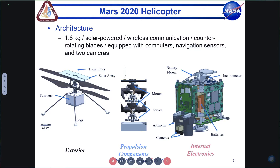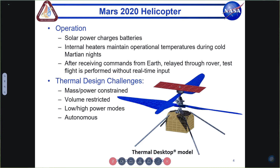The Mars 2020 helicopter is pretty small and lightweight — about 1.8 kilograms. It's solar powered and uses wireless communication between itself and the rover. It includes two counter-rotating carbon fiber blades that rotate at about 2,400 RPM. It's equipped with computers, navigation sensors, and multiple cameras. The components include the legs, fuselage, blades, solar array, transmitter, motors, servos, internal electronics, cameras, sensors including an inclinometer and altimeter, and batteries — a very critical component and a major area for thermal modeling.